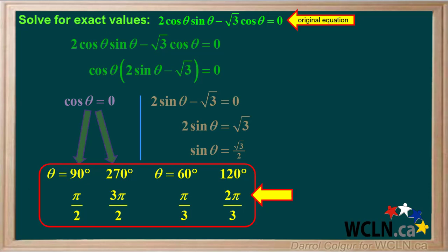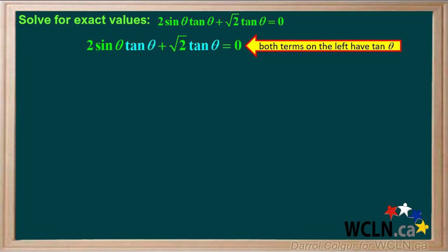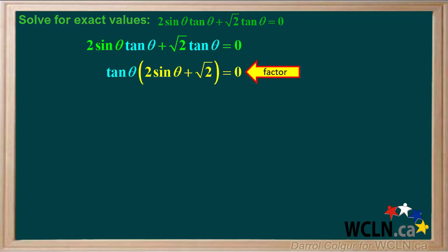Let's do one more example. We're asked to solve this equation for exact values and determine the values for angle theta. We see that both terms on the left side have tan theta, so we can factor the equation and we get tangent theta times 2 sine theta plus root 2 in brackets, equals 0.